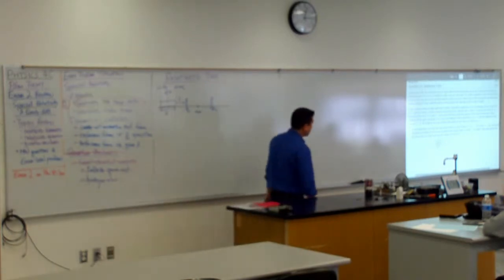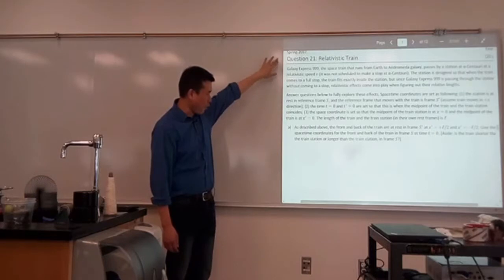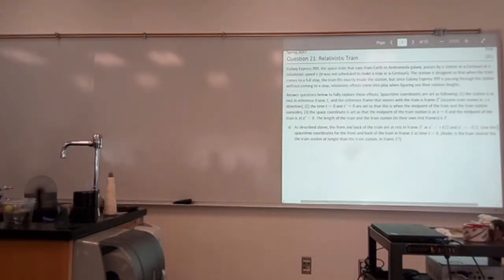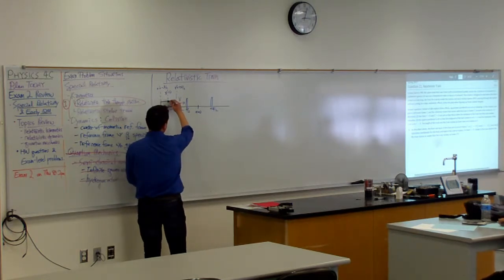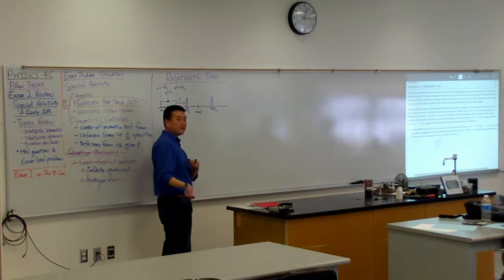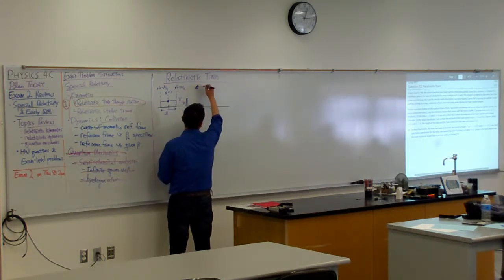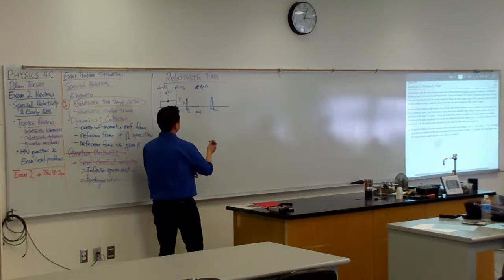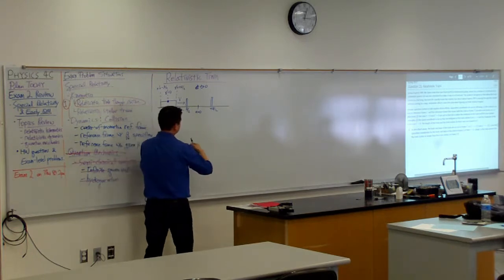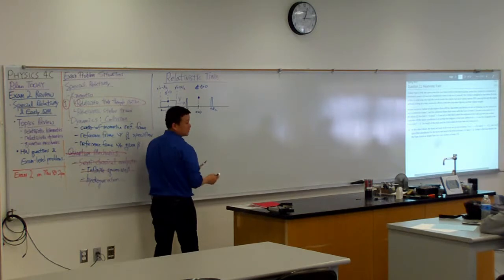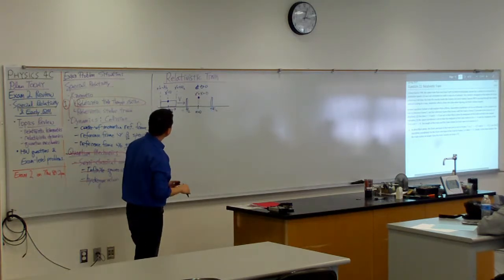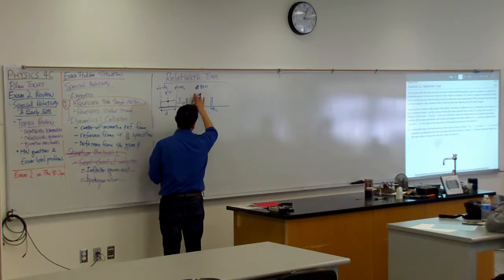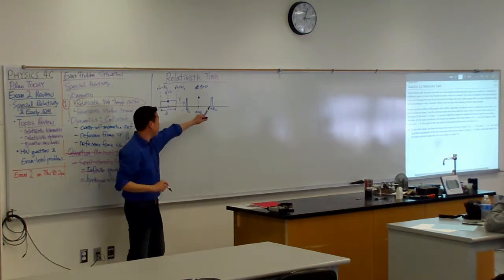Part A asks for the following. The coordinate systems are arranged so that if this is the midpoint of the train, then at time t equals zero, this midpoint coincides with the midpoint of the train station. So at time equals zero, x prime equals x equals zero — or rather, the midpoint of the train is coinciding with the midpoint of the train station.